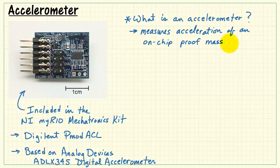To begin, let's just consider some general ideas about accelerometers. This is a device that measures the acceleration of an on-chip proof mass. And here's the concept.